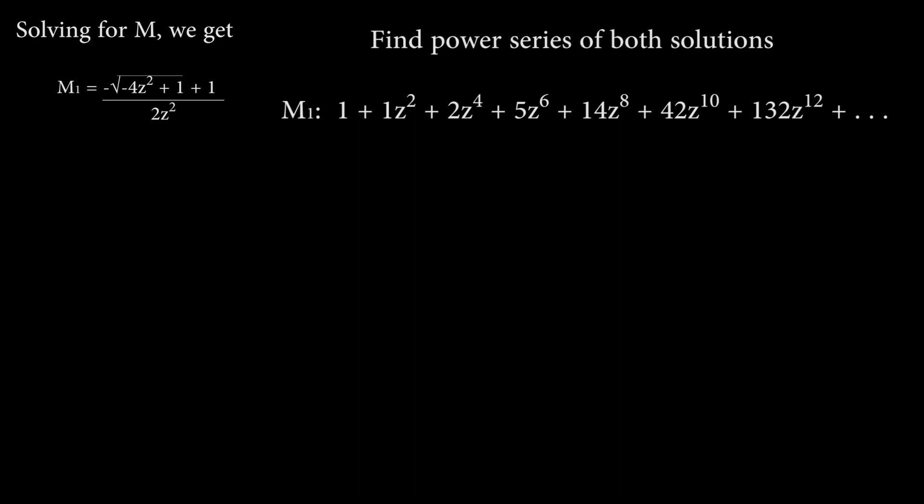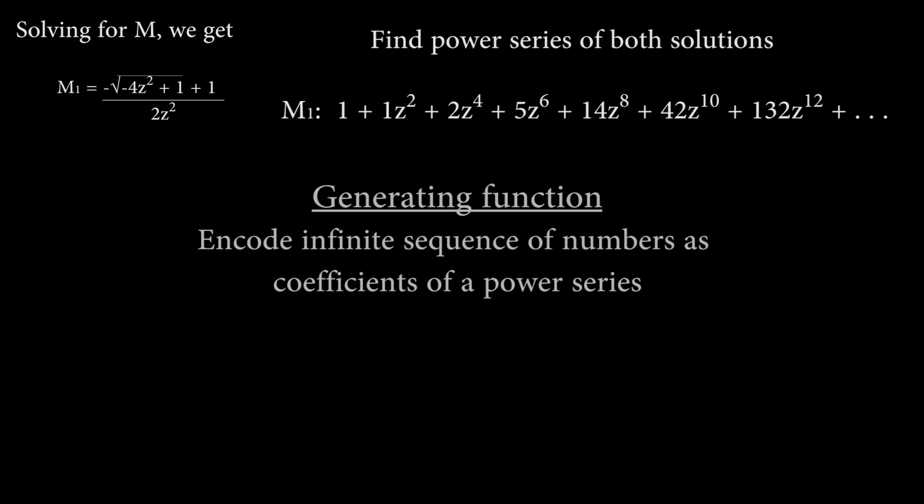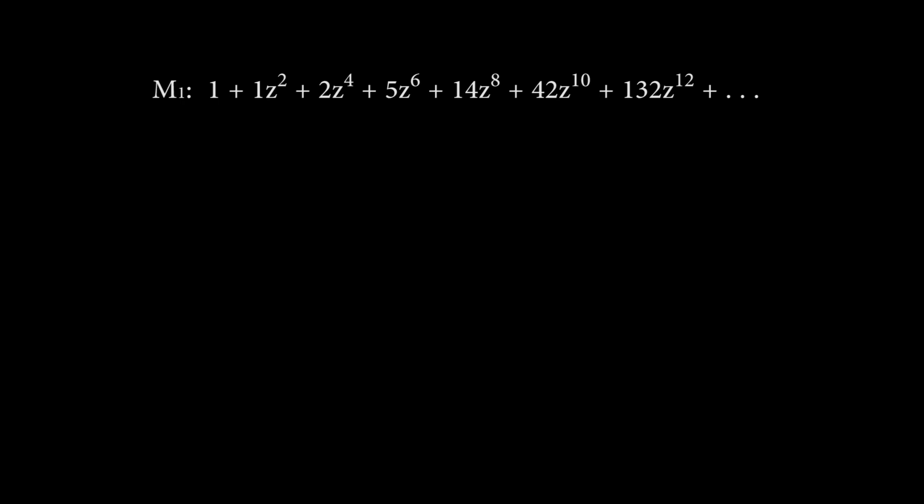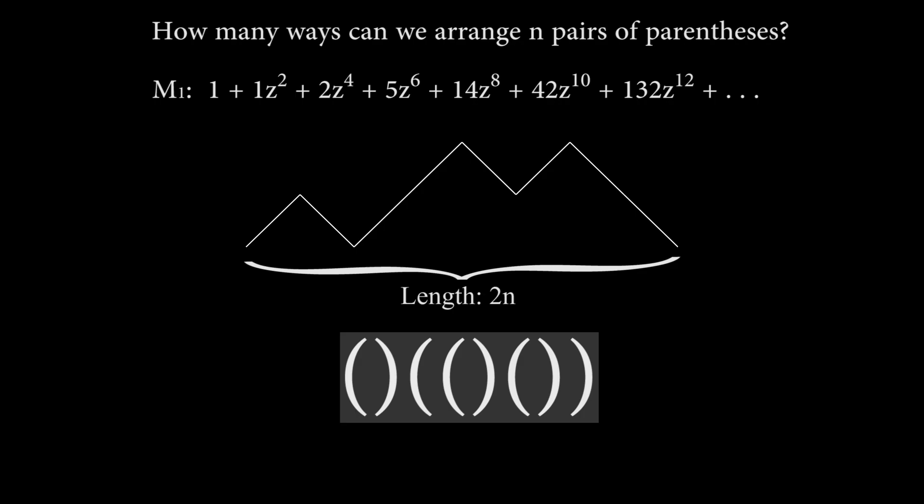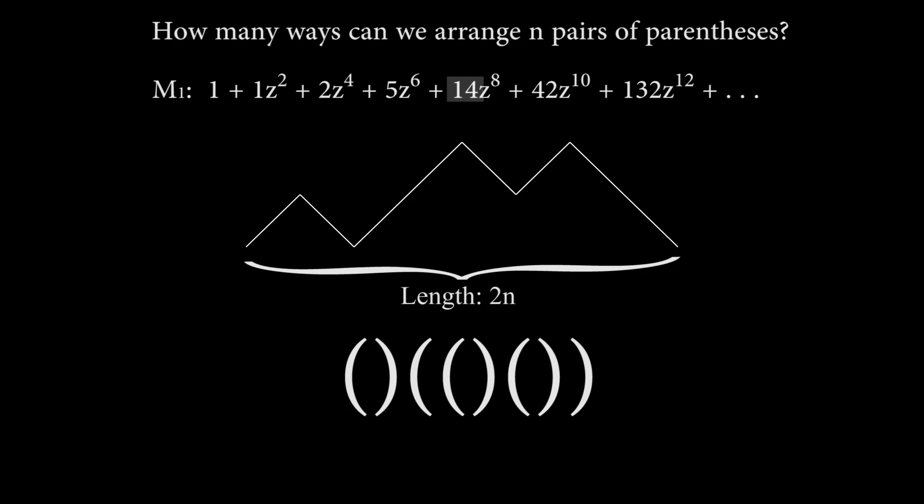The way that we encoded this infinite sequence in a single function makes it a form of a generating function. Because all we had to do to decode the sequence is find the Taylor series of the function. And now we have everything we need to answer our original question of how many ways there are to arrange n pairs of parentheses. If we have n pairs of parentheses, we know that each open parenthesis maps to an upstep in its corresponding path, and each closing parenthesis corresponds to a downstep. So the path length will have length 2n. So if we have four pairs of parentheses, we look at the term which has eight as its exponent, and this tells us that there are 14 ways to validly arrange them.